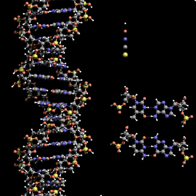DNA exists in many possible conformations including A-DNA, B-DNA, and Z-DNA forms, although only B-DNA and Z-DNA have been directly observed in functional organisms. The conformation that DNA adopts depends on the hydration level, DNA sequence, the amount and direction of supercoiling, chemical modifications of the bases, the type and concentration of metal ions, and the presence of polyamines in solution. The first published reports of A-DNA X-ray diffraction patterns used analyses based on Patterson transforms that provided only a limited amount of structural information for oriented fibers of DNA.